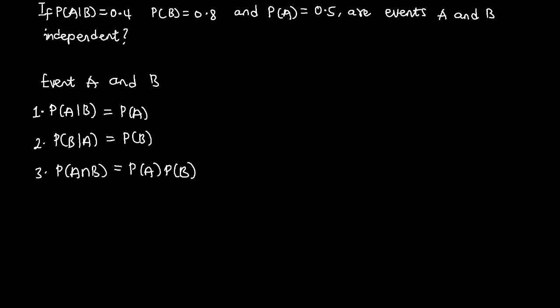If any of these three statements are satisfied, then events A and B are independent. Now let's look at the examples. The first question is: if the probability of A given B equals 0.4, the probability of B equals 0.8, and the probability of A equals 0.5, are events A and B independent?